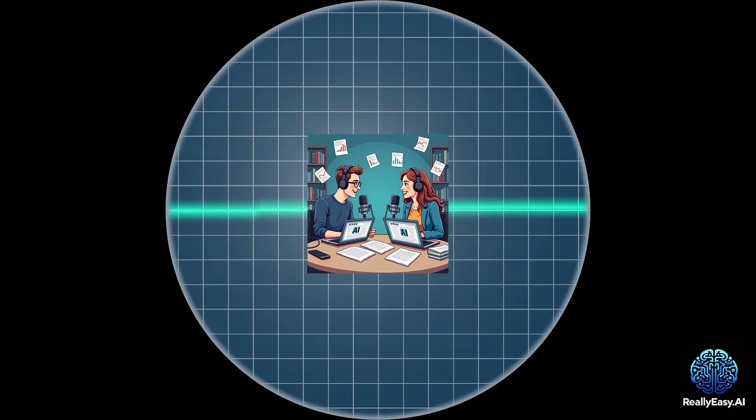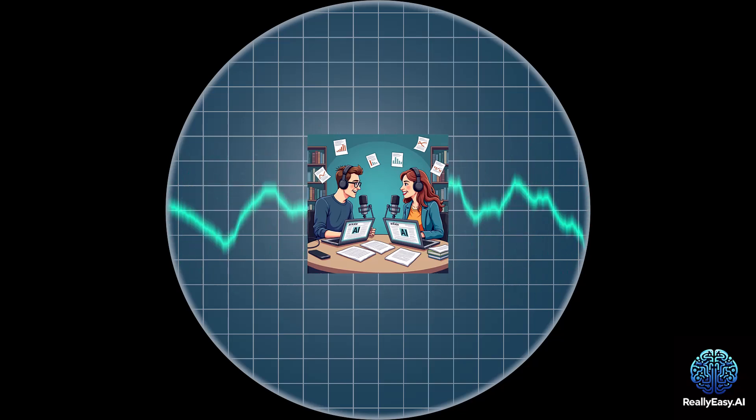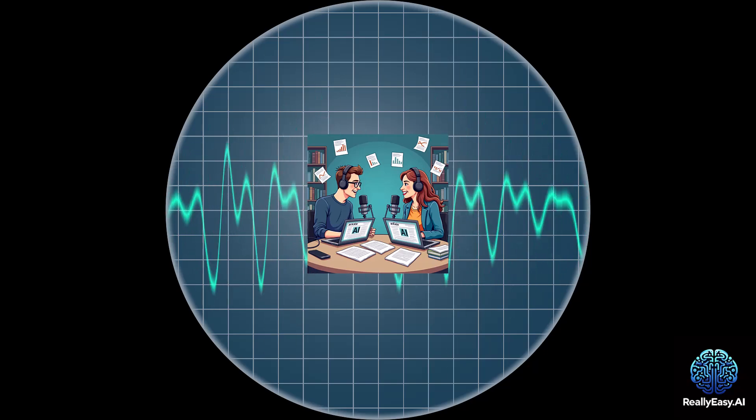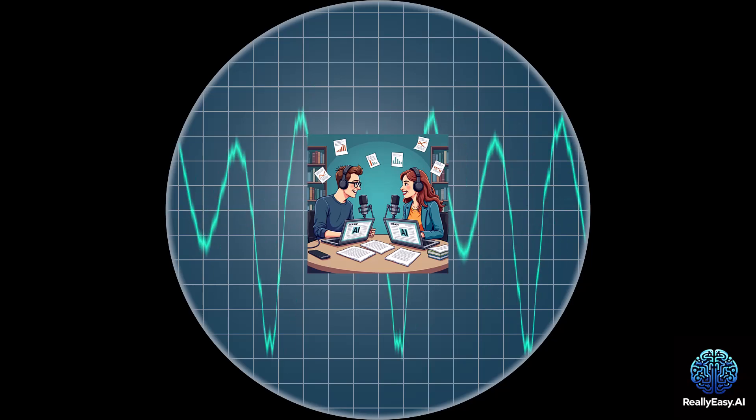So how did this paper go about comparing SFT and RL? They didn't just set two AIs loose on the internet, did they? Not quite. They designed two clever testing environments, General Points and VIRL. Those names are pretty intriguing. What are they all about? General Points is like a supercharged math game. The AI is given four playing cards and has to figure out how to combine them using addition, subtraction, multiplication, and division to reach a target number.